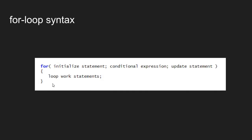The syntax for a for-loop is as follows. We have the keyword for, followed by a pair of parentheses. Inside the for-loop parentheses, we have three statements: an initialize statement which initializes the conditional variable, a conditional expression to test whether to stay in the loop or not, and an update statement that describes how we update the conditional variable. Then inside the for-loop's attached code block, we have all of the statements that execute the work of the loop.